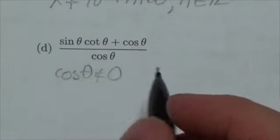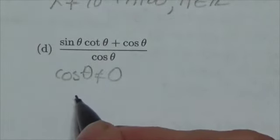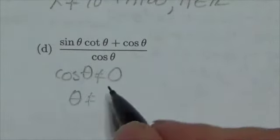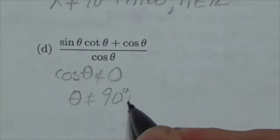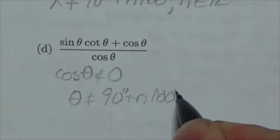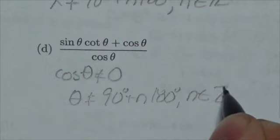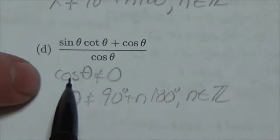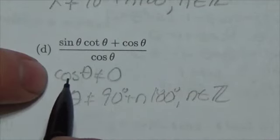We know that this means theta cannot equal 90 plus n times 180, where n is an element of the integers. This is because cosine is related to the x-coordinate.